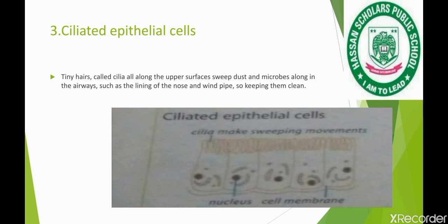The diagram of ciliated epithelial cells shows that they have two important components: the nucleus and the cell membrane. The cilia make sweeping movements, and therefore these movements are important for their function.